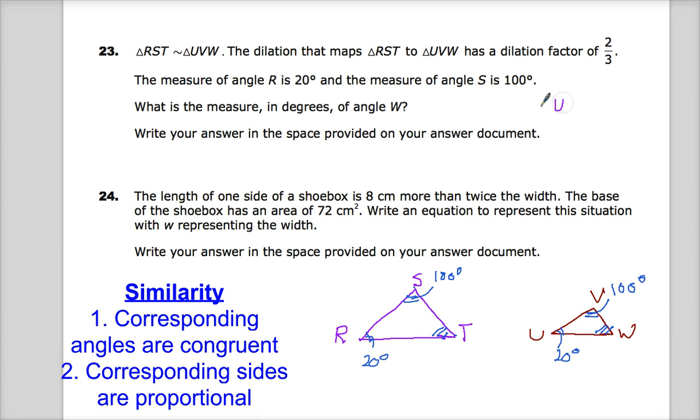So I'm going to use the fact that the sum of all the angles of a triangle is 180. So I'll do measurement of angle W plus measurement of angle V plus measurement of angle UVW.